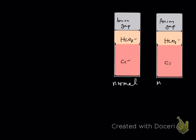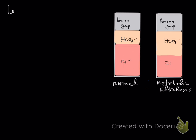In a metabolic alkalosis, the driving force is the loss of hydrochloric acid, or the sequestration or trapping of it. What happens is we get an increase in bicarbonate secondary to this. What's driving this is the loss or sequestration of HCl.